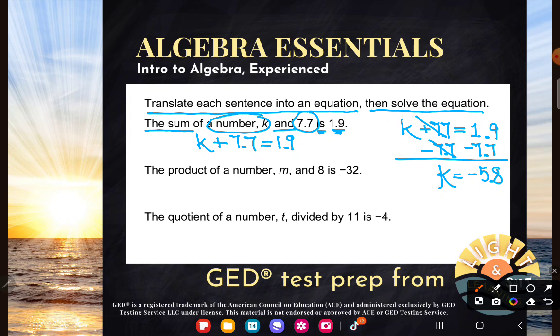Next example here. The product of a number M and 8 is negative 32. Oh, look at me reviewing all the basic ops vocab. Like I want you to remember it. The product of a number M and 8. What am I saying when I say product?